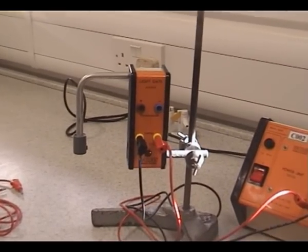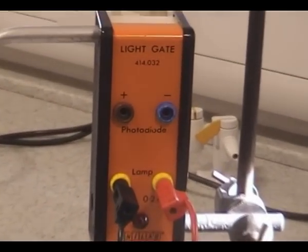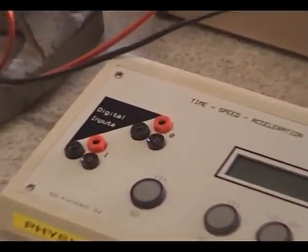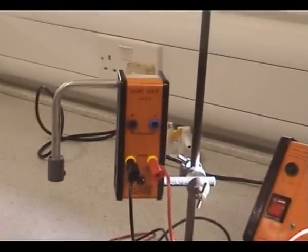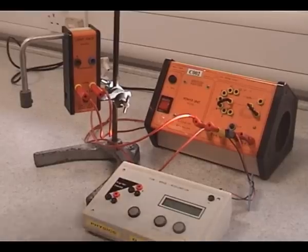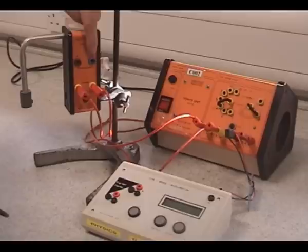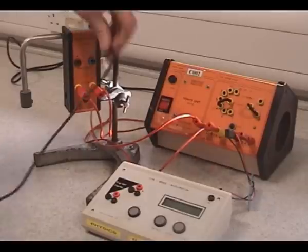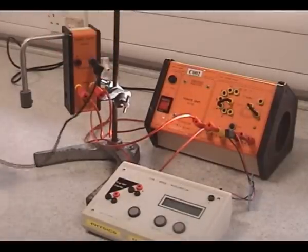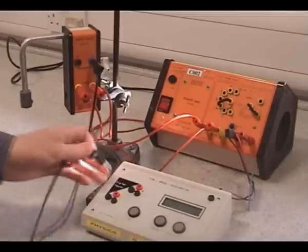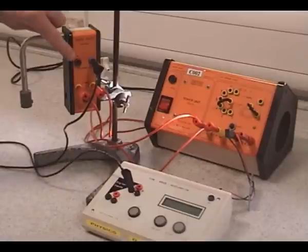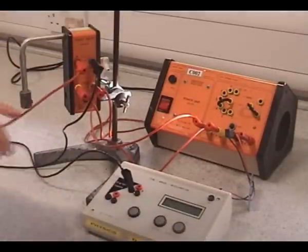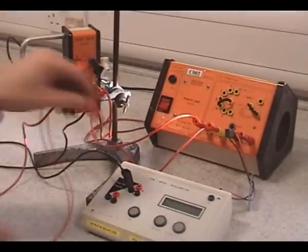And now the photodiode that detects whether the light beam is present or not. And it's important to make sure the photodiode is connected the right way around. It's a diode that only conducts one way. So we're going to connect firstly the negative terminal of the photodiode to the black terminal on the first of the inputs on the TSA. Then the positive terminal from the photodiode to the red terminal on the first of the digital inputs.